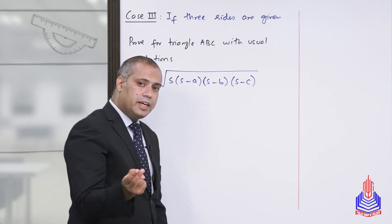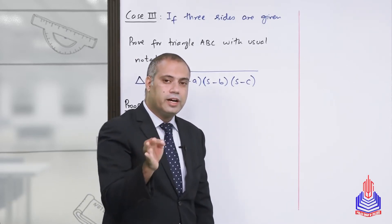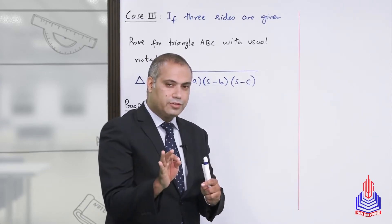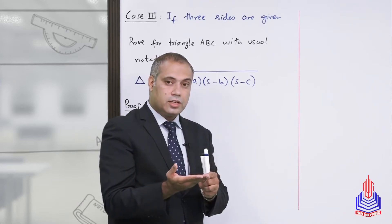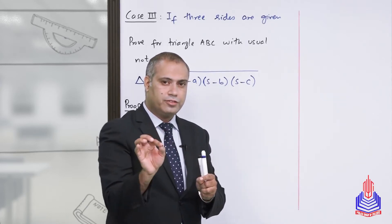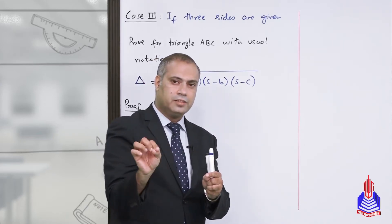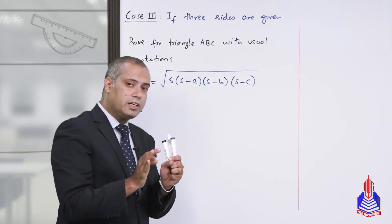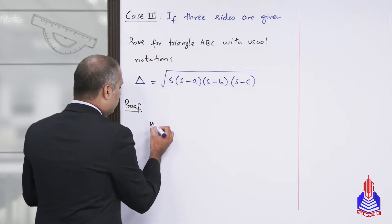To derive this formula, we will again use Case 1 as our base. In Case 1, we discussed two sides and included angle. When two sides and included angle are given, the formulas for area of triangle are: half of ab·sin γ, half of bc·sin α, and half of ca·sin β. We can take any one of these as the base and derive the Heron's formula.